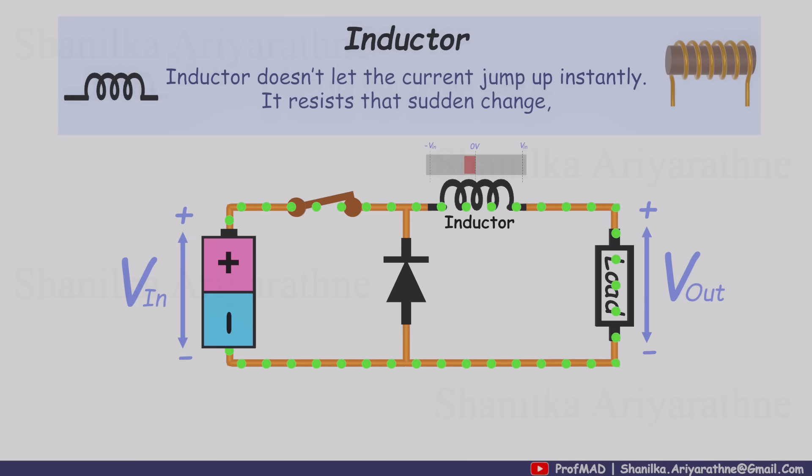But now, imagine the switch turns off. The inductor doesn't want the current to drop suddenly either. To keep the current flowing, it generates whatever voltage is needed, releasing the energy it stored moments earlier.